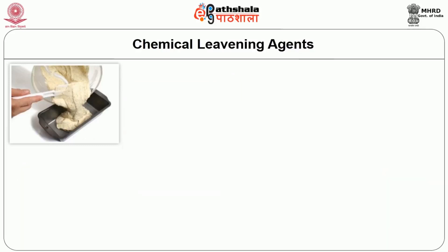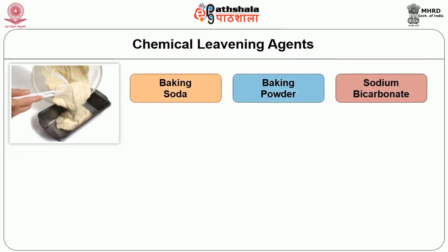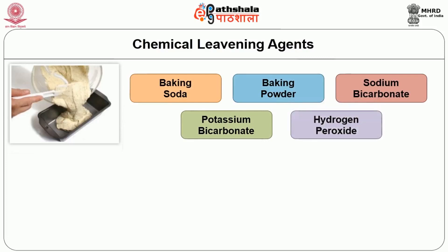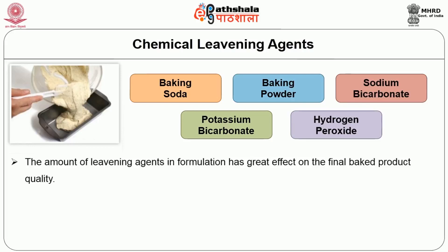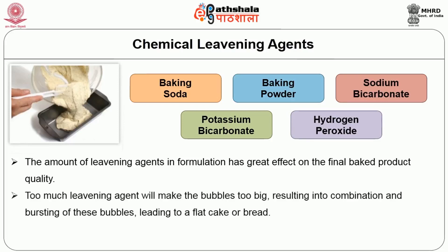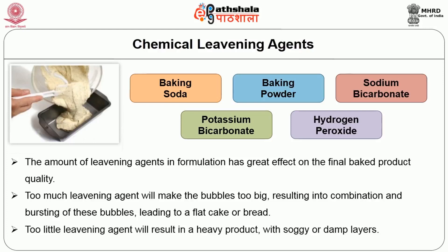Various types of chemical leavening agents are used, including baking soda, baking powder, sodium bicarbonate, potassium bicarbonate, and hydrogen peroxide. The amount of leavening agent in a formulation has a great effect on the final baked product quality. Too much leavening agent will make the bubbles too big, resulting in combination and bursting of these bubbles, leading to a flat cake or bread. Too little leavening agent will result in a heavy product with soggy or damp layers.